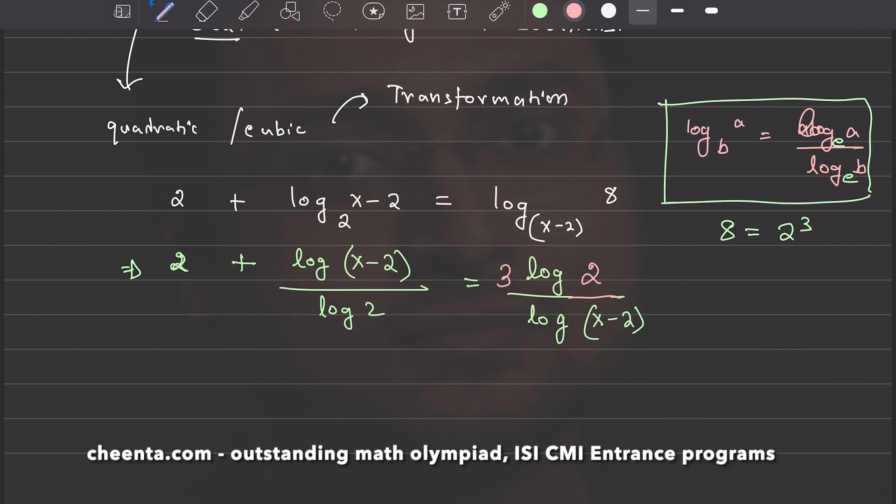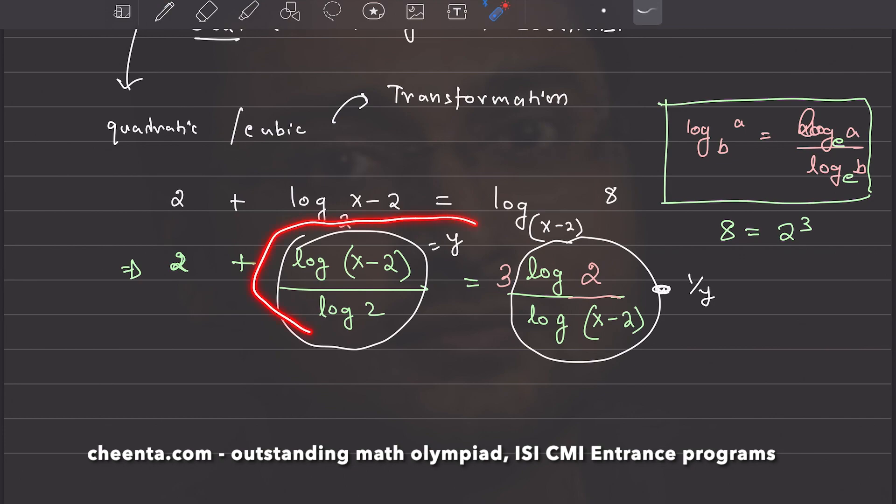We will be writing that. If this thing is y, then this particular thing right here is 1 over y. So, this is the transformation part of the entire story. We will be replacing this fraction, this expression right here, by a letter called y. And similarly, we will be replacing this one by 1 over y. That will highly simplify everything.